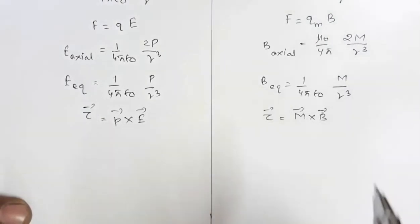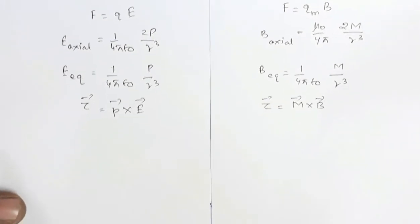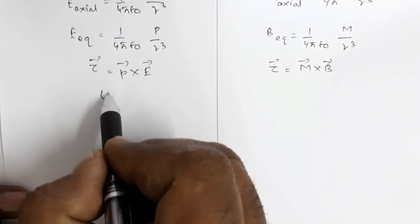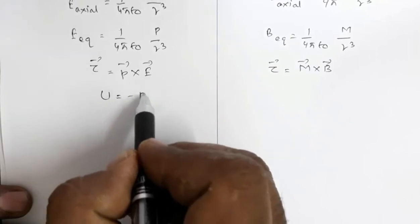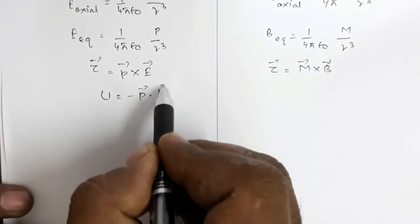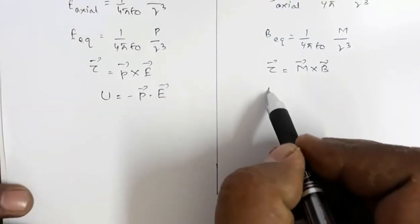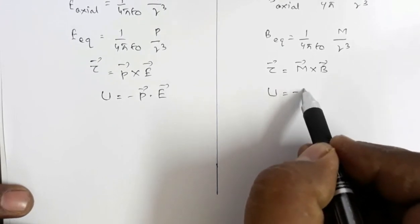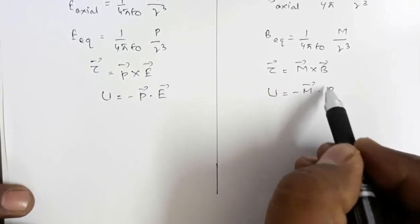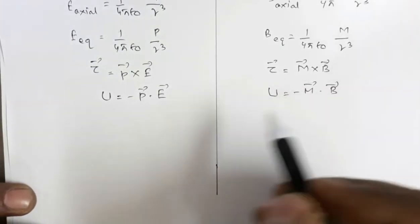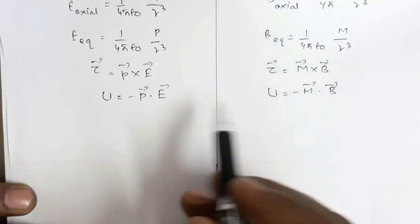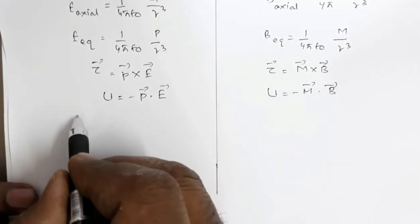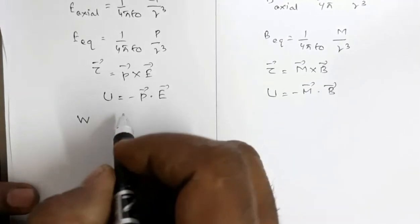The potential energy of an electric dipole is U = −P · E. The analogous expression for a magnetic dipole is U = −M · B, where P is replaced by M and E is replaced by B.